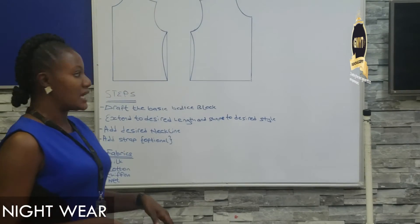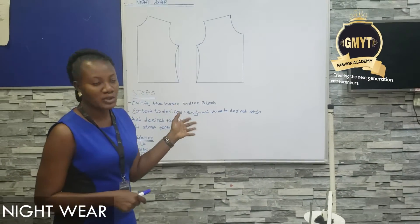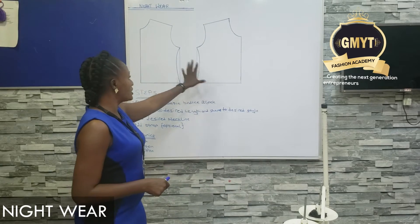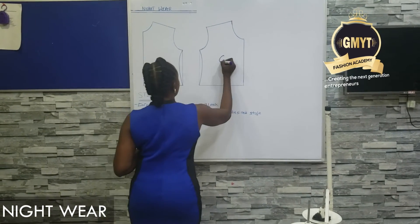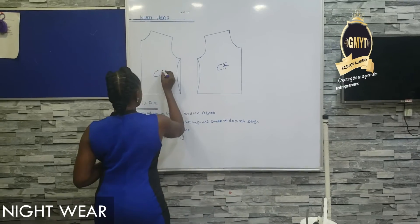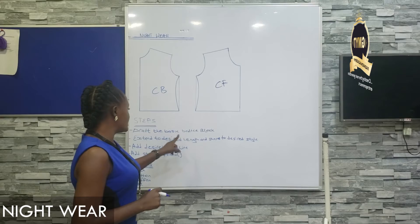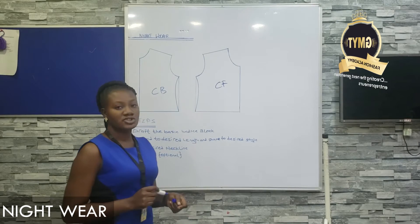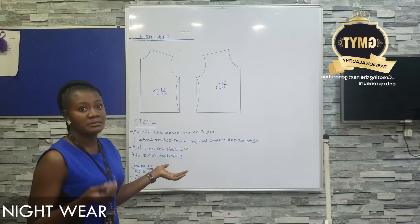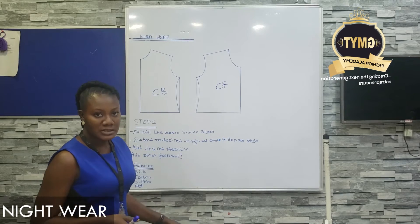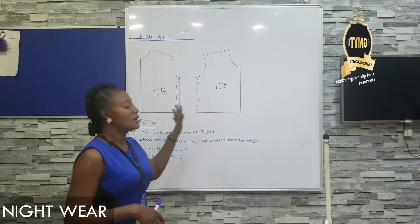Back to our class. The first step is to draft the basic bodice block, which I have done on the board. This is my basic bodice block — this is my CF and this is my CB. The next step is to extend to your desired length and shape to your desired style. It can be short or long. For the purpose of this class, I will leave mine short.